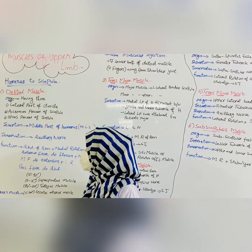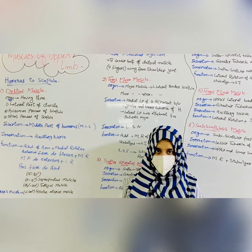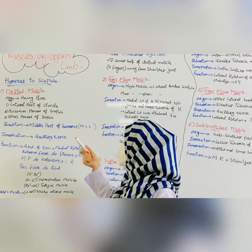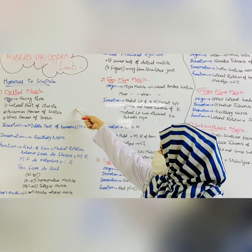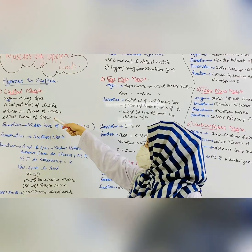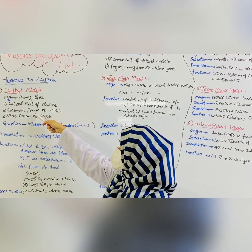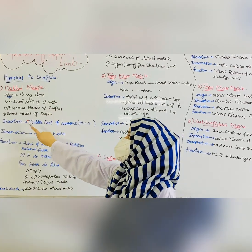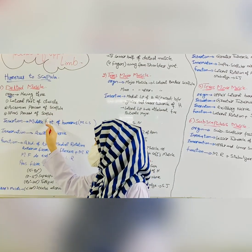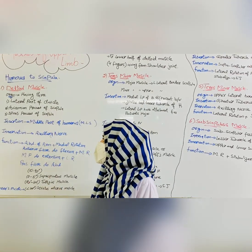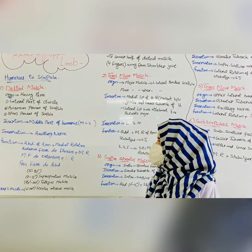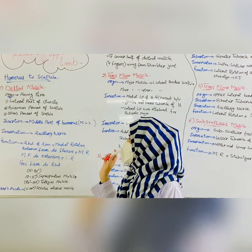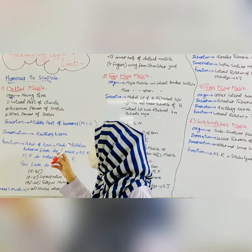My first muscle is the deltoid muscle. It has three origins: the first is the lateral part of the clavicle, the second is the acromion process of the scapula, and the third is the spinous process of the scapula. Its insertion is the middle part of the humerus and its innervation is the axillary nerve.